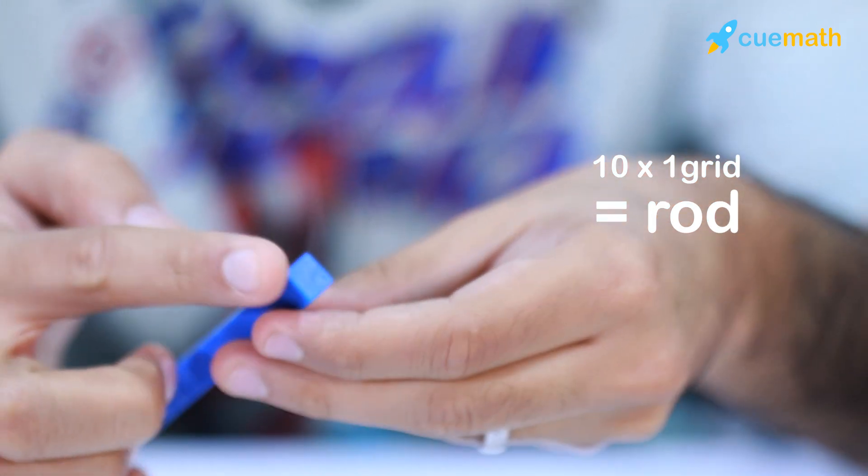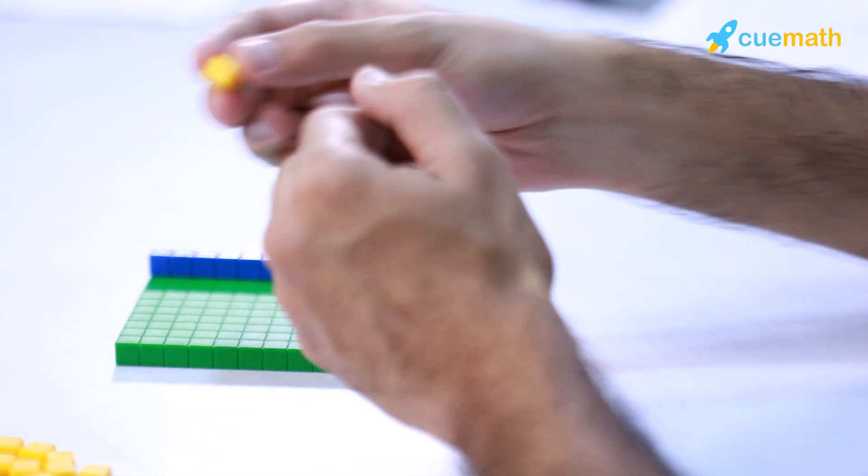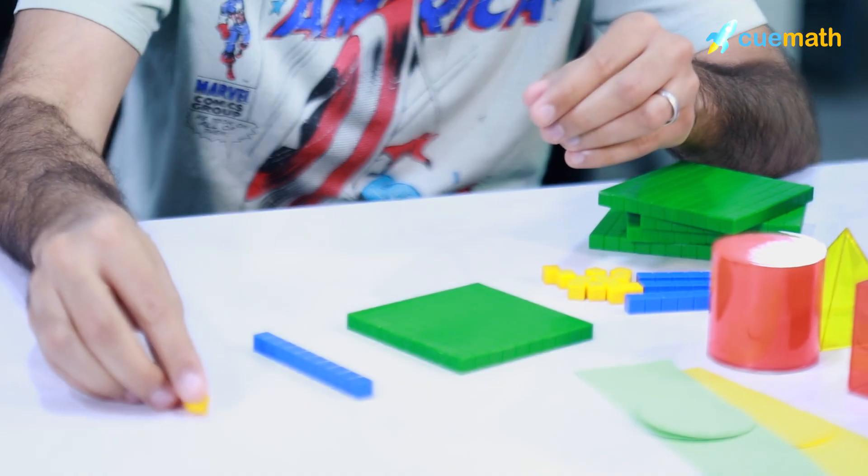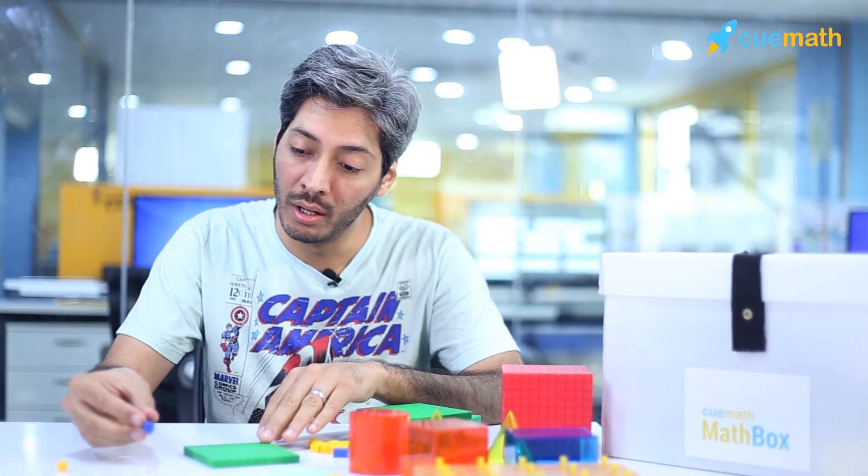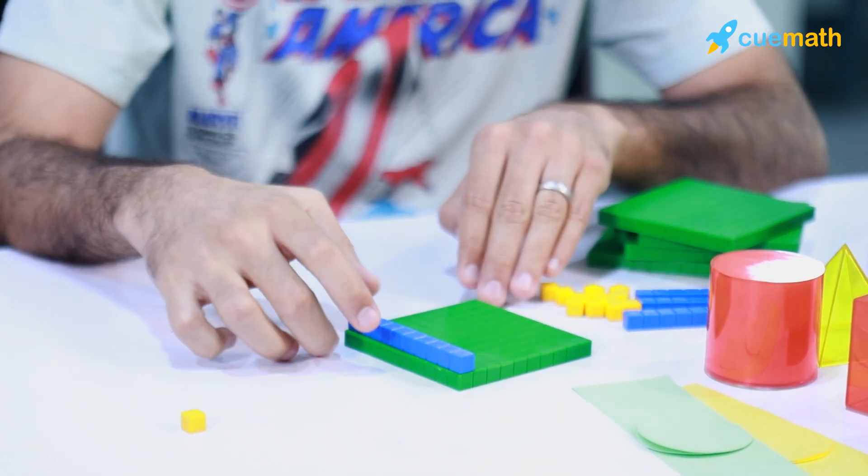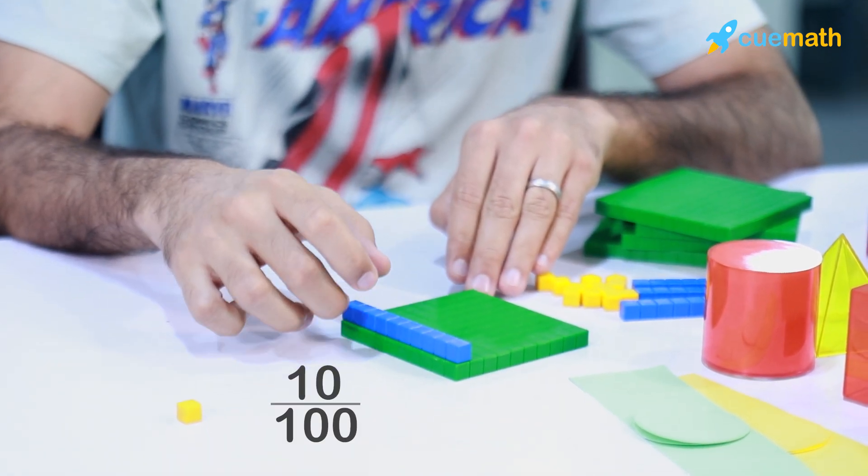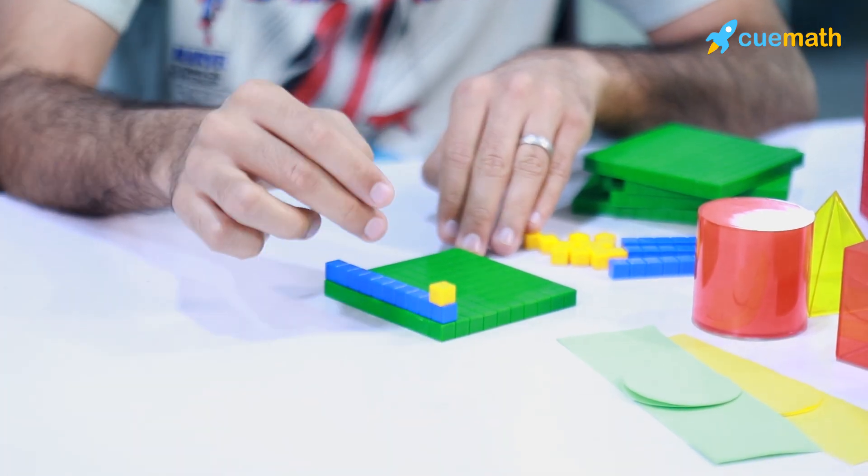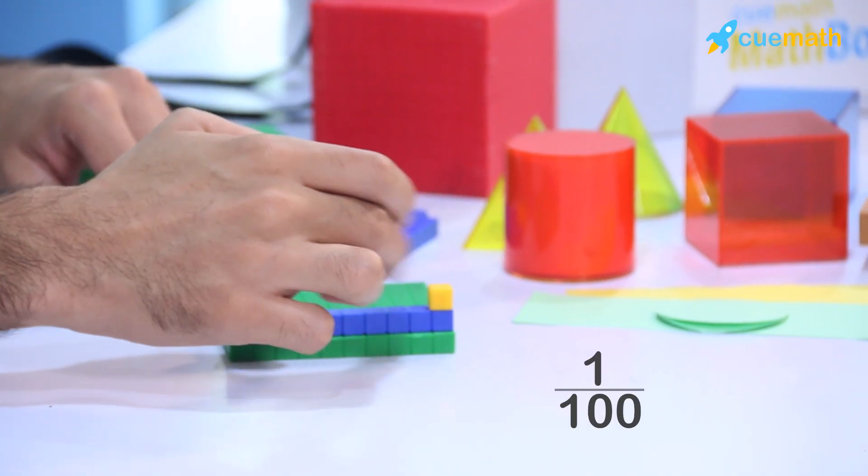Now let's take something we call a rod, which is 10×1, and then we take something called a block, which is just 1×1. Now this is 10 on a total surface area of 100, so this is 10/100, or 0.1.